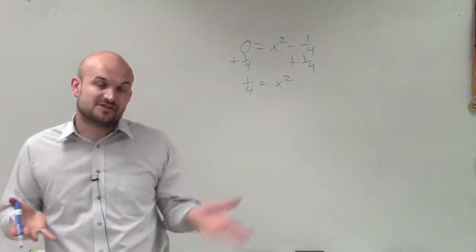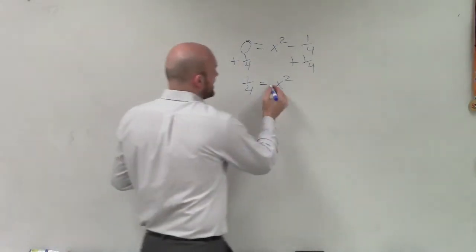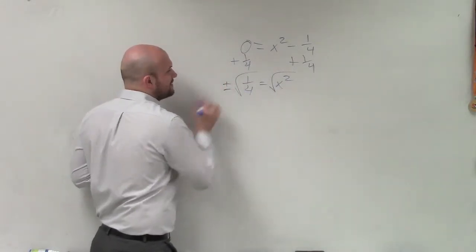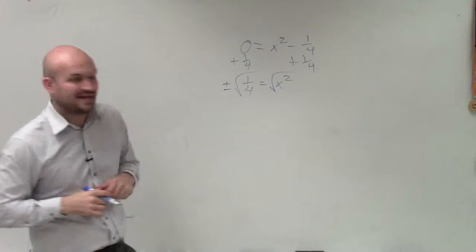Now, to undo the squaring feature of my variable, I can undo squaring by taking the square root of both sides. Remember, whenever we introduce the square root, we have to make sure we include the positive and the negative value of our number.